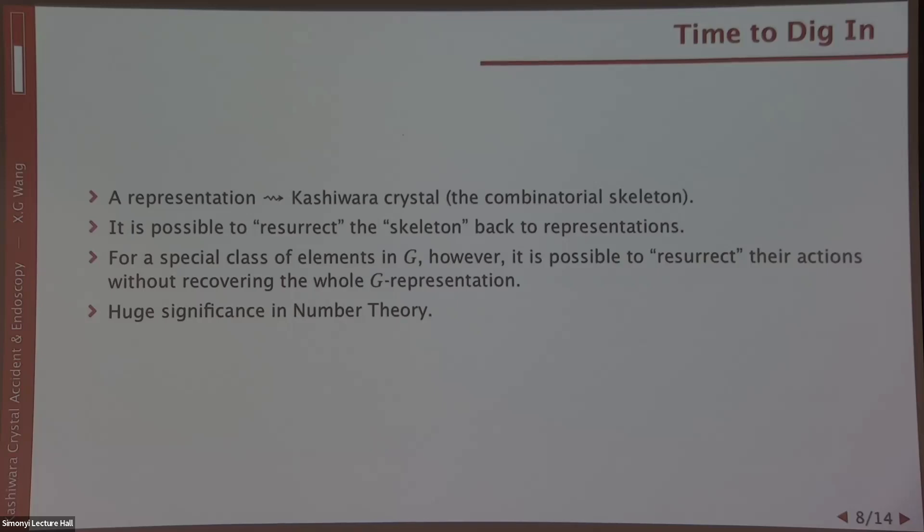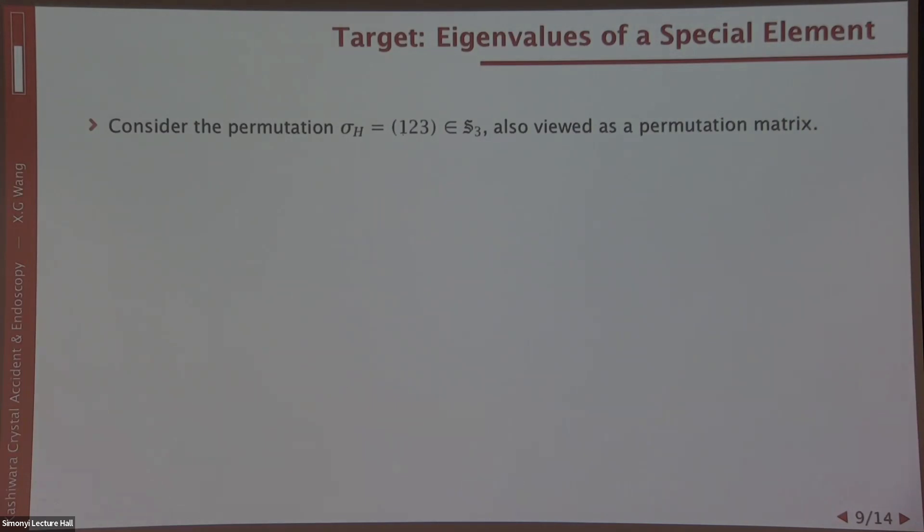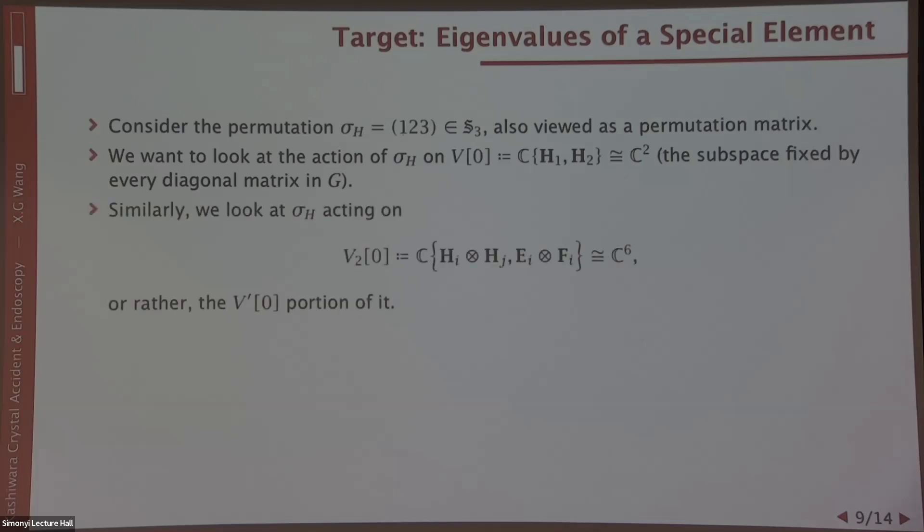I hope everyone has finished their Kashiwara crystals because now we are going to perform some endoscopy. The special element I mentioned earlier is this element sigma h. This is a permutation (1,2,3) and also viewed as a 3 by 3 permutation matrix. Now we want to look at the action of sigma h on the so-called zero-weight space. This is a subspace of V that is fixed by every diagonal matrix. This is a two-dimensional space spanned by H1 and H2. Similarly, we look at a similar thing for V2. This is a subspace of V2, which is six-dimensional. Or rather, for simplicity, we'll only be focusing on the V prime part.